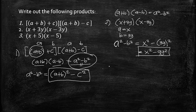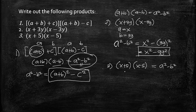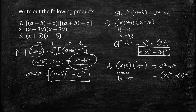For number three, we have (x + 5)(x − 5). Same form: a = x and b = 5. Therefore, a² − b² gives us x² − 25.